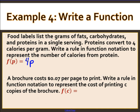A brochure costs seven cents per page to print. Write a rule in function notation to represent the cost of printing c copies. Using c because the problem uses c: f(c) = 0.07c, where multiplying by 0.07 gives the total cost.